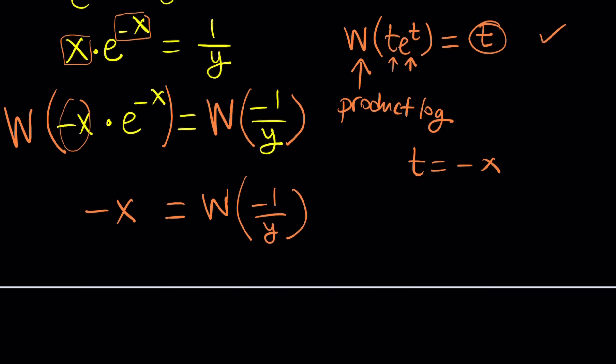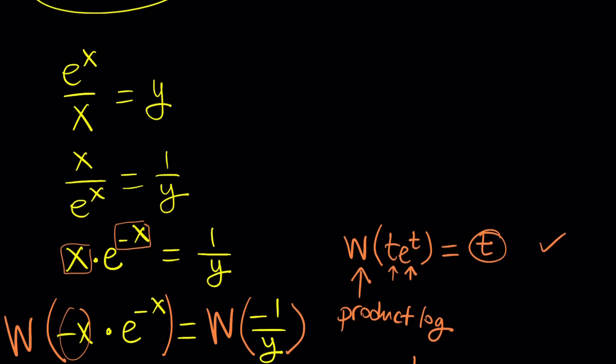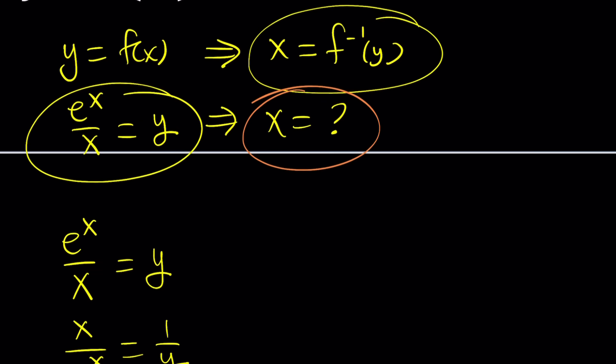And the right hand side, unfortunately, cannot be expressed in a better way. So we have to stick to W of negative one over y. Okay, that's the only way to express it basically. Great. Now, what do you do with that? And always keep that in perspective, remember, we were supposed to solve for x. And we almost did.